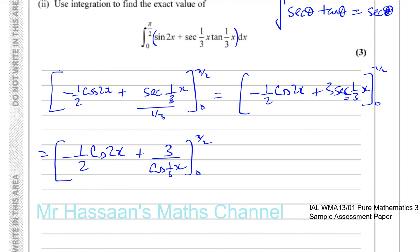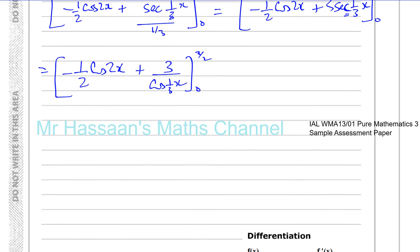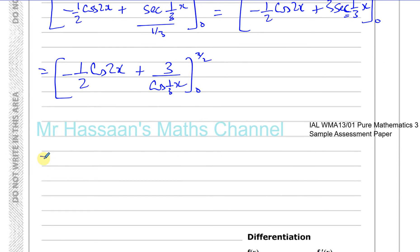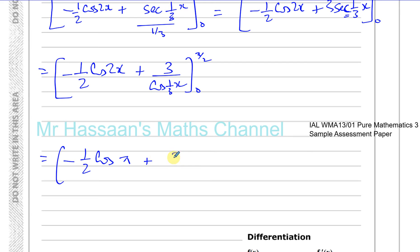Substituting the upper limit π/2: we get minus a half times cos(2 times π/2), which is cos(π), plus 3 over cos(one-third times π/2), which is cos(π/6).